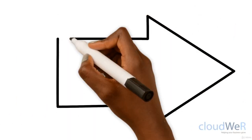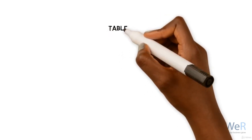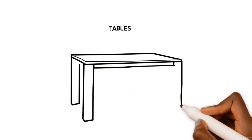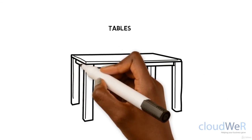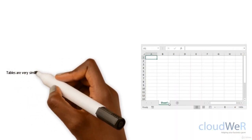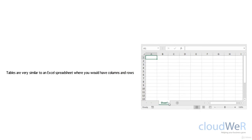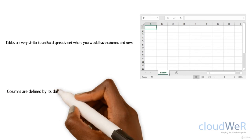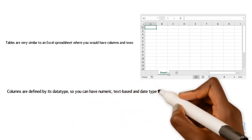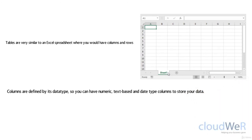A table is where you store information gathered from a source. Tables are very similar to an Excel spreadsheet with columns and rows. You insert information into the table and save the data within the database rather than a file. To make a row uniquely identifiable you add a primary key, which lets you search for the correct entry. Columns are defined by their data type — numeric, text-based, or date — which helps with data validation.